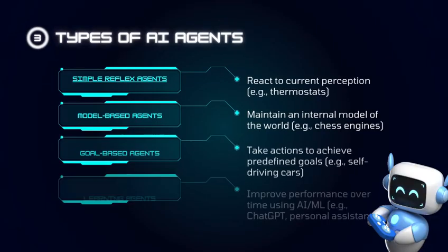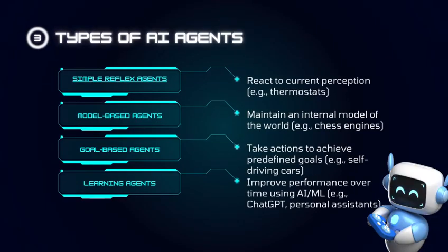Types of AI agents: Simple reflex agents react to current perception. For example, thermostats.